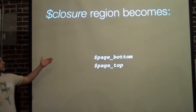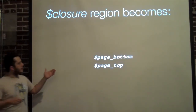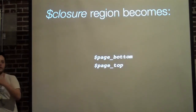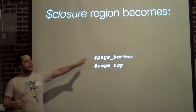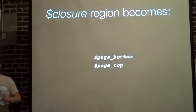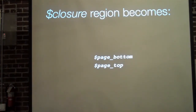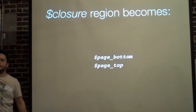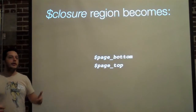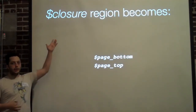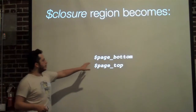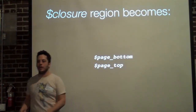The closure region is now called page_bottom and page_top. Page_bottom takes over for closure. For those who don't know what closure was used for — things like Google Analytics or JavaScript at the bottom of the page — that's stuff that doesn't render anything visible, so it needs to be at the very bottom before the body closes. Now it's been changed to page_bottom, and page_top followed along with this new naming convention.